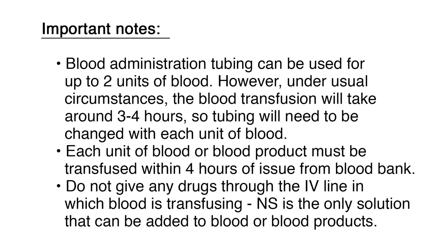Here are some important notes to remember when giving a blood transfusion. Blood administration tubing can be used for up to two units of blood; however, under usual circumstances the blood transfusion will take around three to four hours, so tubing will need to be changed with each unit. Each unit of blood or blood product must be transfused within four hours of issue from the blood bank. Do not give any drugs through the IV line in which the blood is transfusing — normal saline is the only solution that can be added to blood or blood products. All vital signs — temperature, blood pressure, pulse, and respiration — must be assessed and documented according to hospital policy.